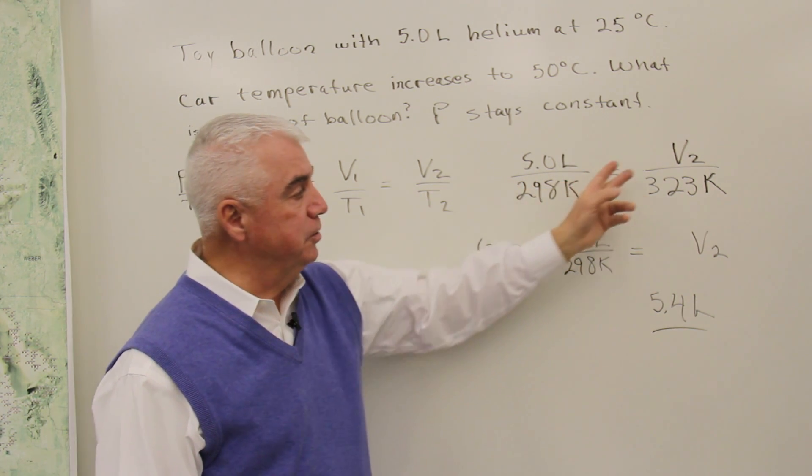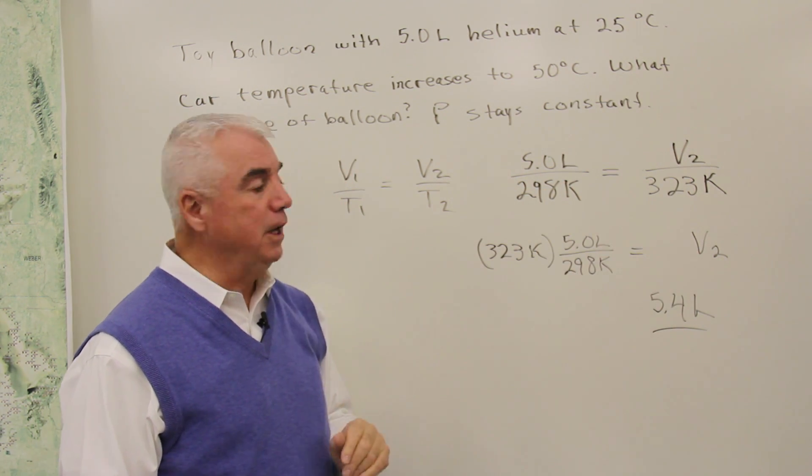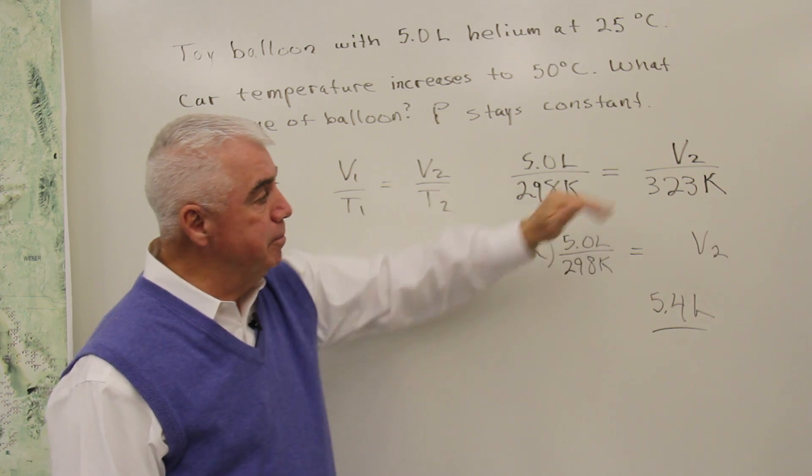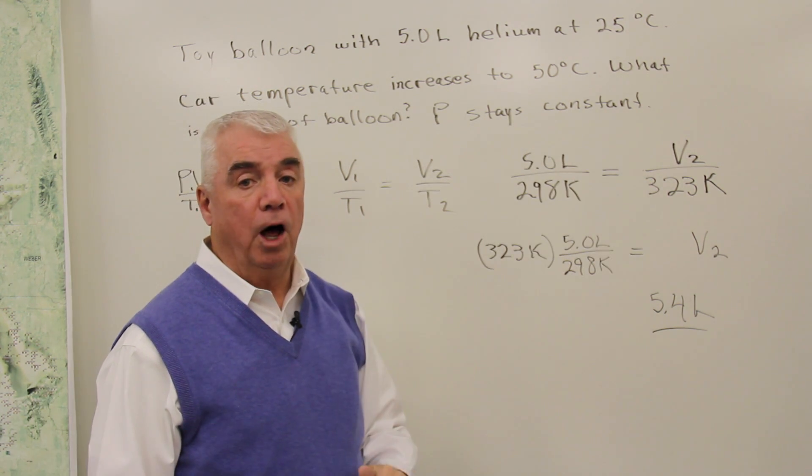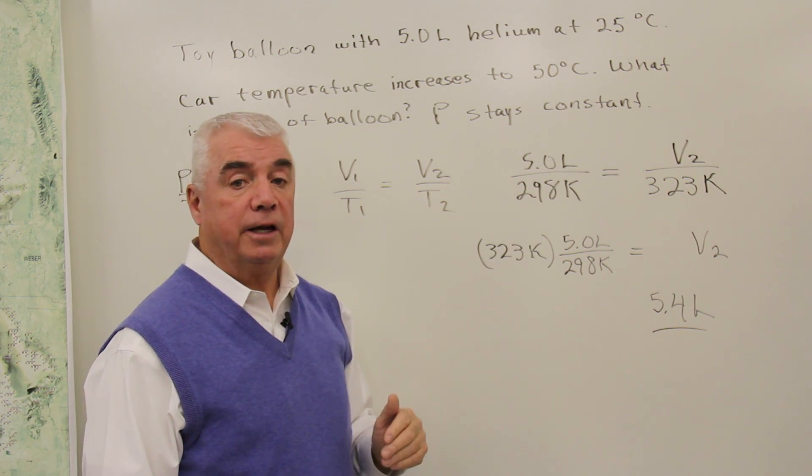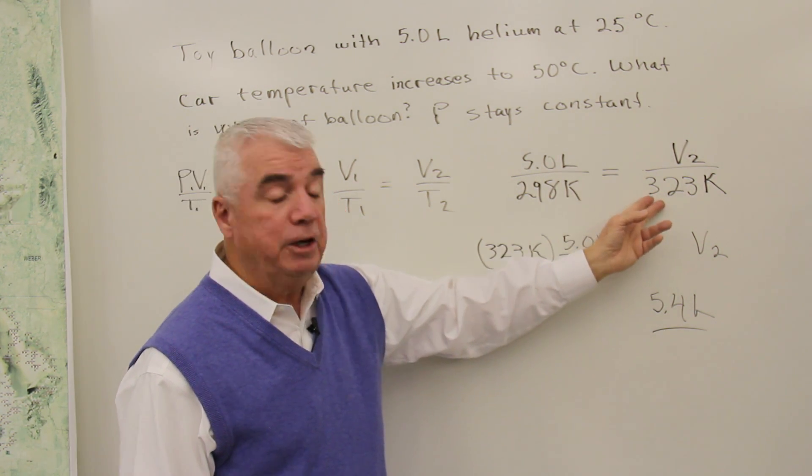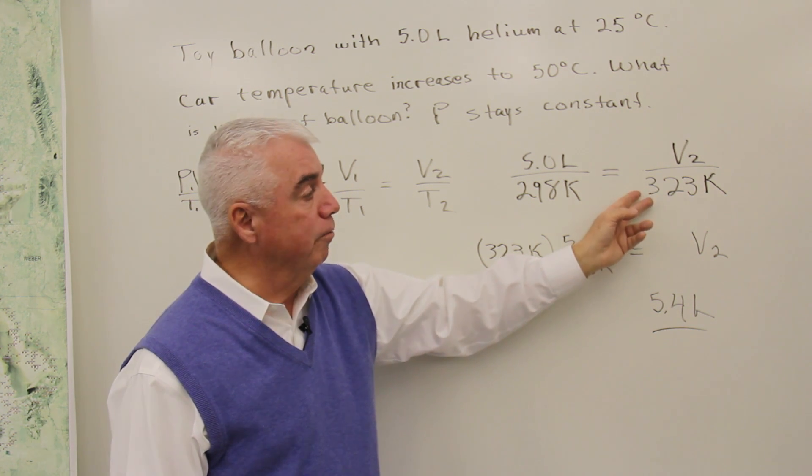The objective always is to get the unknown on one side and all of the numbers on the other side. Maybe you're used to cross-multiplying to simplify equations like this. And that would be great if you like to work the problem that way. I see 323 in the denominator over here.